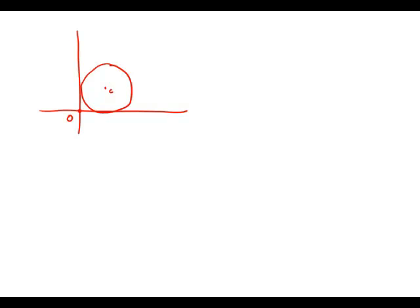So if it's tangent, that means it's just touching at one point. It's an exact radius from the axis to that point and an exact radius from C to this axis.